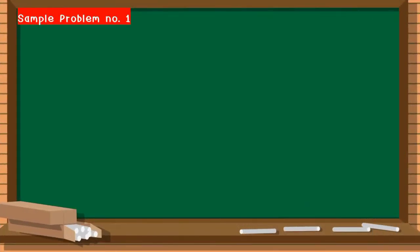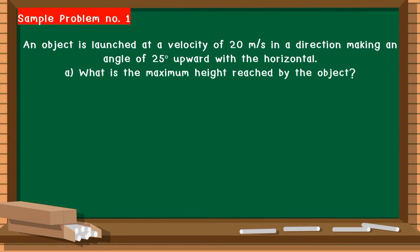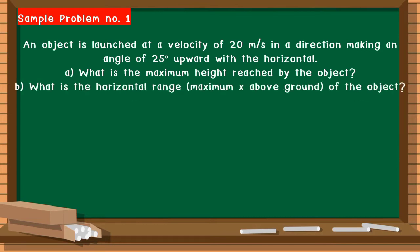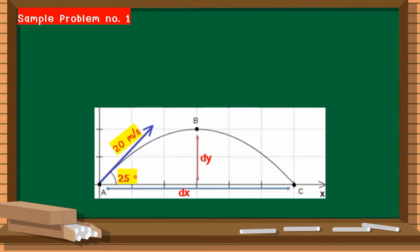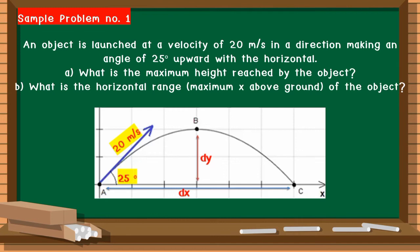Let us have sample problem number one. An object is launched at a velocity of 20 meters per second in a direction making an angle of 25 degrees upward with the horizontal. We need to find the maximum height reached by the object and the horizontal range of the object. Looking at the illustration, from the launch point we have 20 meters per second upward, creating a 25-degree angle.